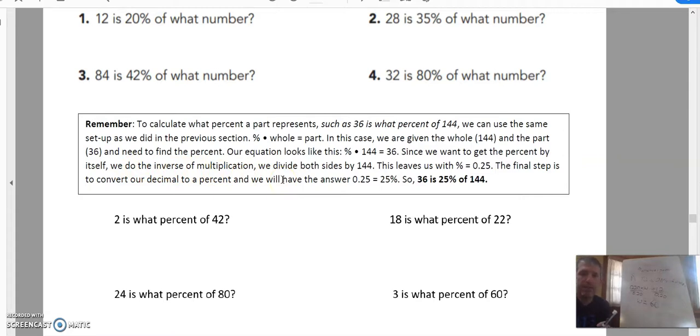This leaves us with percent equals 0.25. But that's not a percent yet. That is a decimal. So we need to change that decimal to a percent by moving the decimal over two places, and we get 25%. So 36 is 25% of 144.